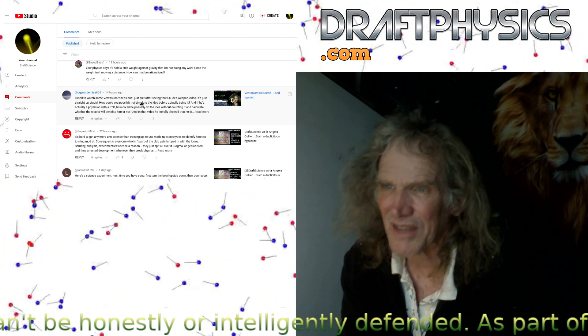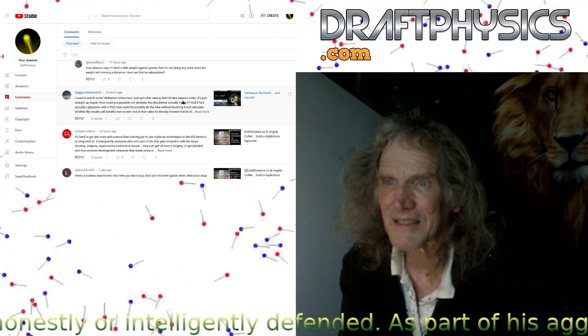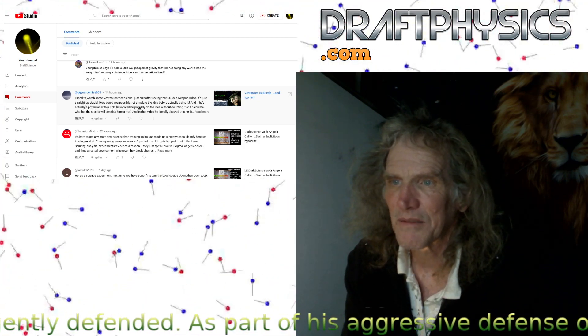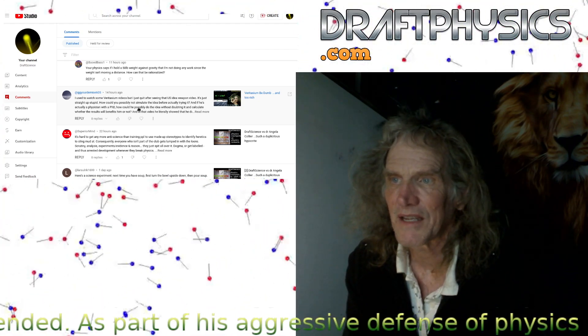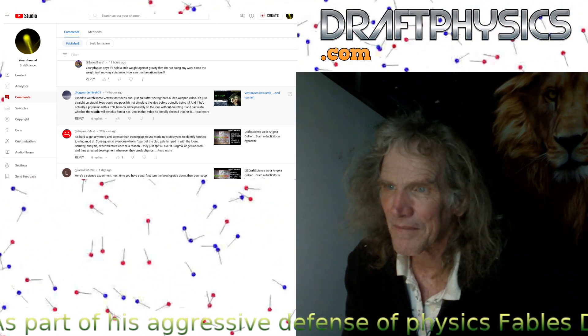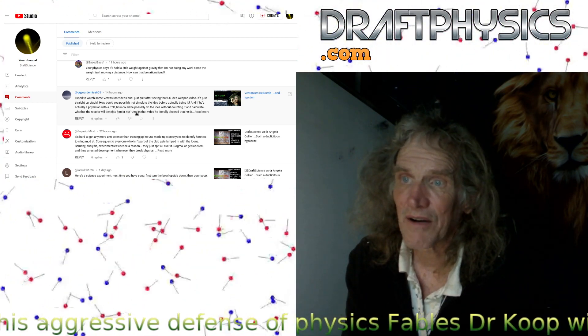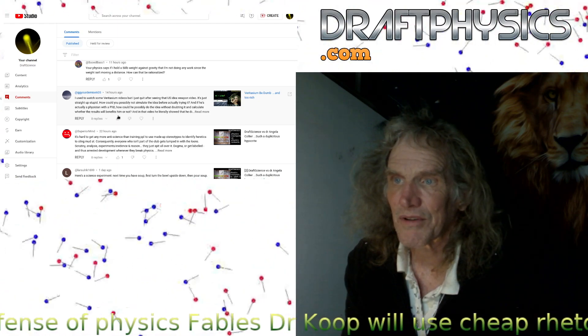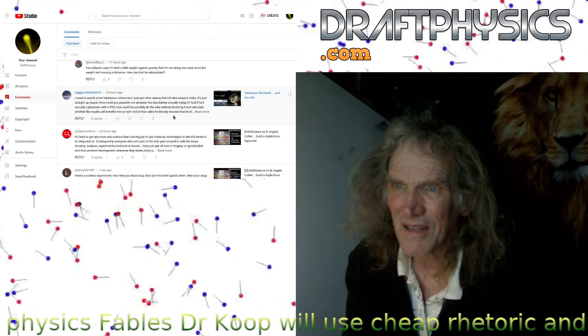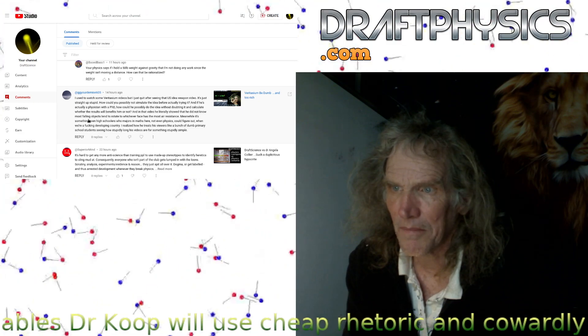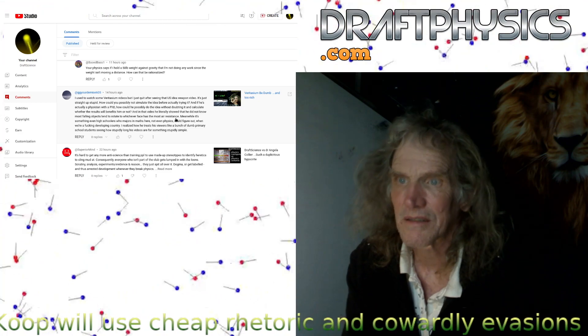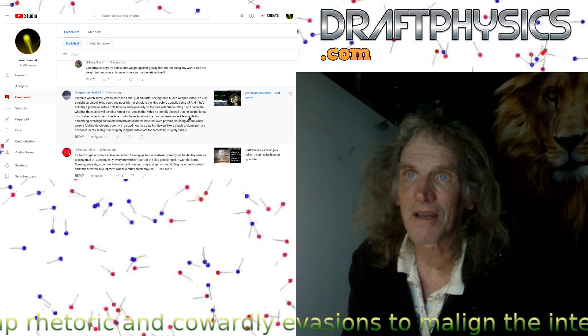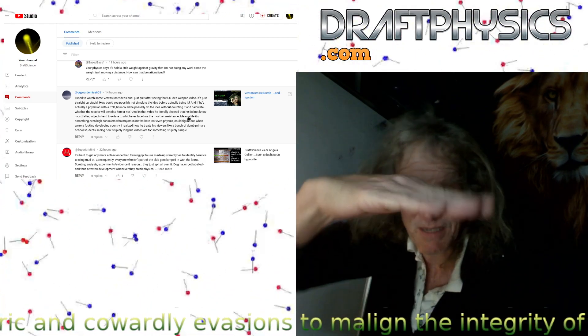I used to watch some Veritasium videos, but I quit after seeing that U.S. Rods from God video. How could you possibly not simulate the idea before actually trying it? And if he's a physicist with a PhD, how could he possibly do the idea without doubting it and calculate whether the results will benefit him or not? In the video he initially showed that he did not know most falling objects tend to rotate to whatever face is the most air resistant. They tend unfortunately not to be perfectly balanced. So they end up stuck on the wider surface because they can oscillate on it.